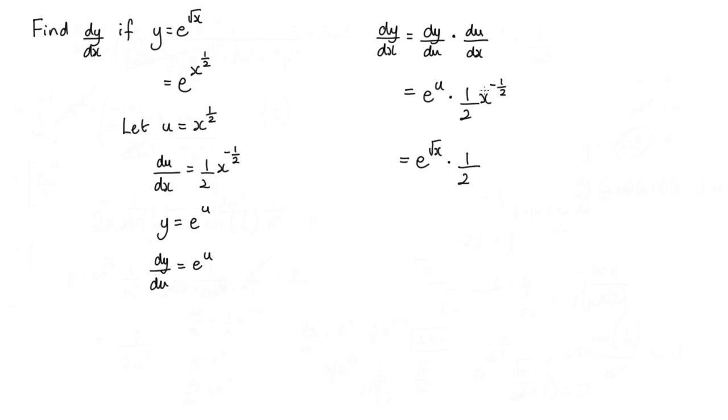Now x to the negative half, well that can be written as 1 over root x. So what we have here is 1 over 2 root x.